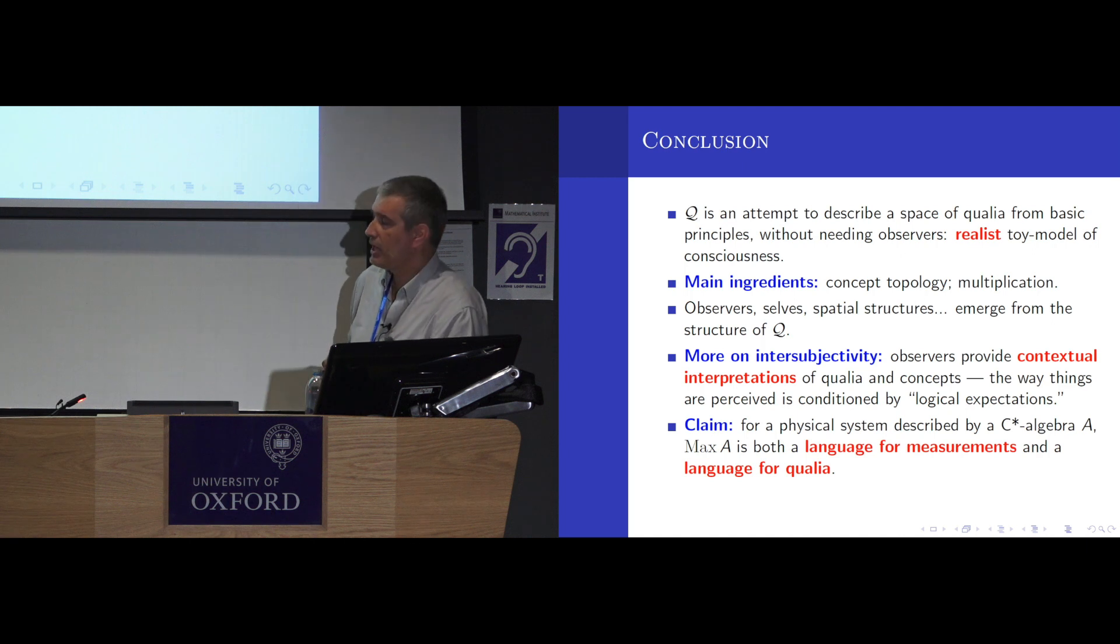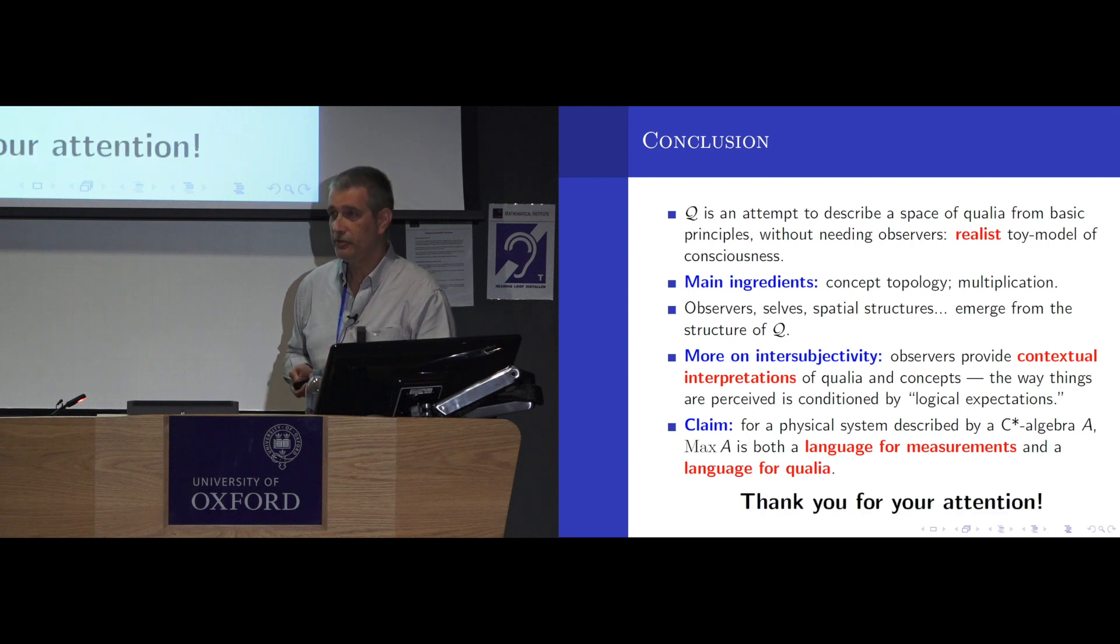And ultimately, for a physical system which is described by C star algebra, well, this quantale max A is, I didn't delve into this, but you can think of it as a language for describing quantum measurements, but also as a language for describing qualia. So, coming from a different direction and without ever mentioning the word collapse until now, this suggests that there's some analogy between measurements and qualia. And that's it. Well, thanks very much for your attention. Thank you.